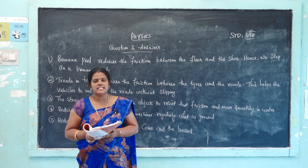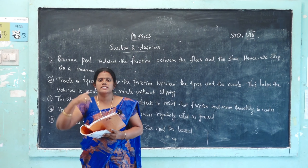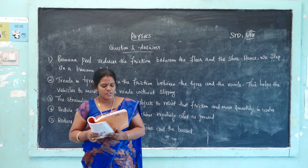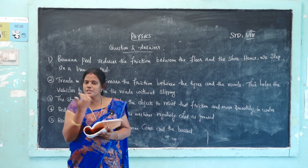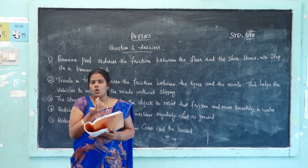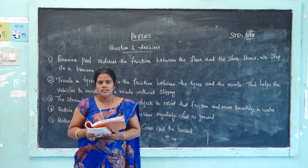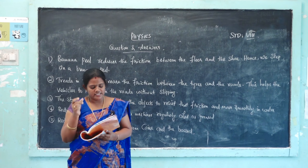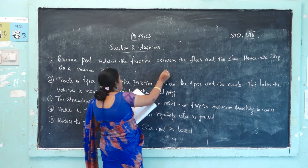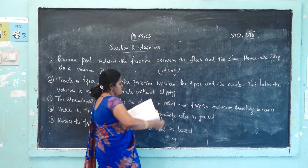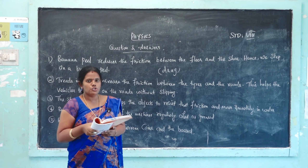Now for fill-in-the-blank questions. First: rolling friction is smaller than sliding friction, and sliding friction is smaller than static friction. Second: frictional force always acts opposite to the direction of motion. Third: friction exerted by fluids — liquids or gases — is called drag.